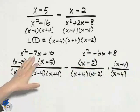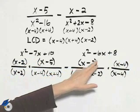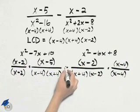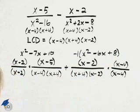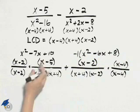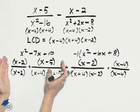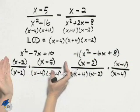And so I end up with this subtract this, which is equivalent to adding the opposite of the second quantity. Now, I know that when I add fractions, I will add the numerators.